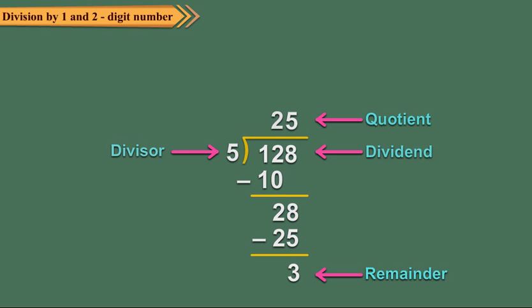Keep in mind: in a division, the remainder is always less than the divisor.